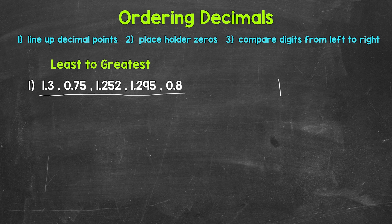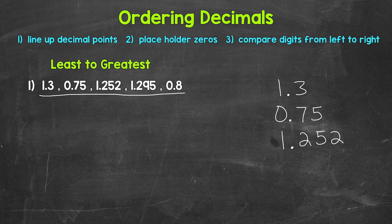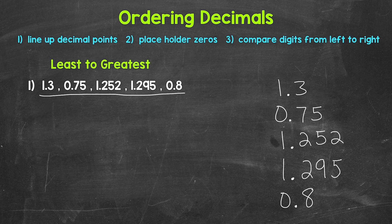So we'll start with one and three tenths. Then we have seventy-five hundredths. Then we have one and two hundred fifty-two thousandths. Next, we have one and two hundred ninety-five thousandths. And then lastly, we have eight tenths. Now, this does look a little off since we have numbers going to different places. So what we can do, we can use placeholder zeros.